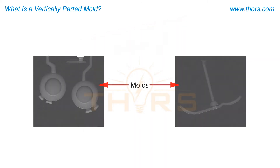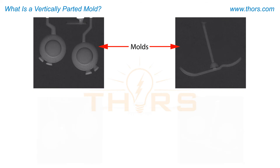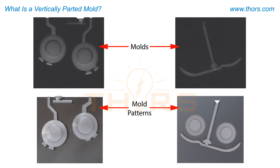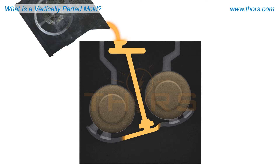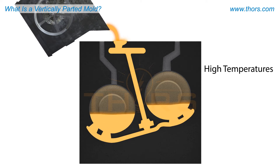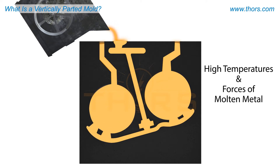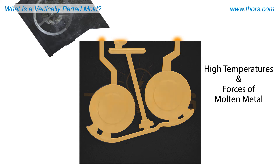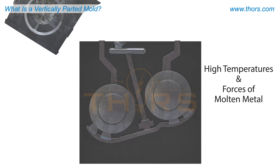Each side of a mold is made using a mold pattern. For a mold to be effective, it needs to be strong enough to withstand the high temperatures of the molten metal and the forces of the molten metal flowing through and solidifying in the mold.